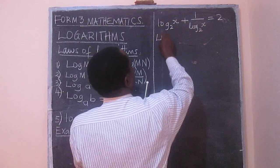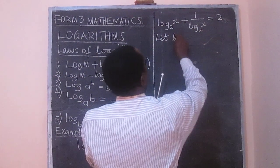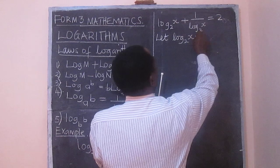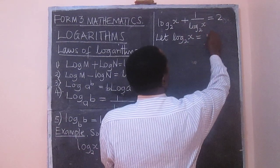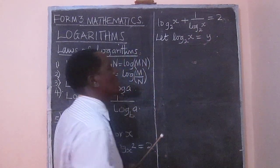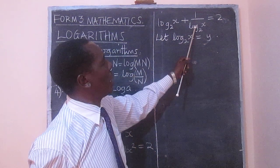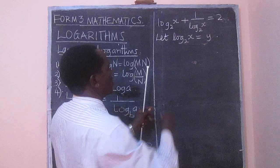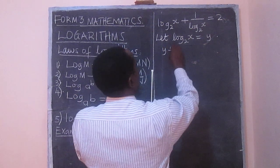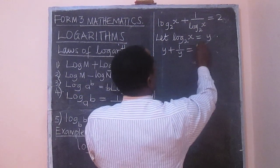Now we can say, let log to base 2 of x equal to y. And therefore, this becomes y plus 1 over y equal to 2. So we have y plus 1 over y equal to 2.